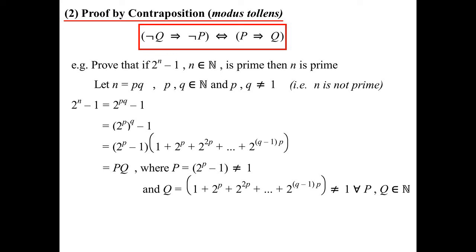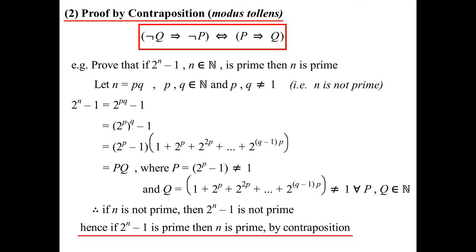And Q — which equals 1 + 2^P + 2^(2P) and so on — is clearly not 1 because we're adding things to 1. So I've proven: if N is not prime, then 2^N − 1 is not prime. Therefore, by contraposition, if 2^N − 1 is prime, then N is prime. It's usually a good idea to state 'by contraposition' so you explain why you've swapped things around.